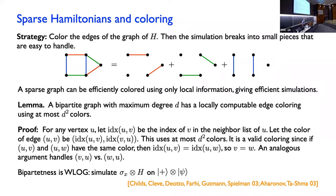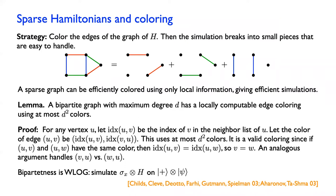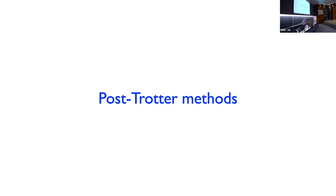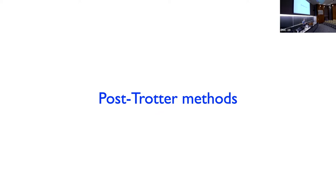That explains how you can simulate sparse Hamiltonians. Now I want to go on to talk about post-Trotter methods. This idea of a product formula simulation — the basic idea was already there in a paper from Seth Lloyd more than 25 years ago. But just in the last 10 years or so, there've been a lot of other Hamiltonian simulation methods developed that achieve better performance, definitely asymptotically, and maybe even in practice. So there's a lot of new ideas for Hamiltonian simulation, and that's what I want to tell you about in this part of the lecture.